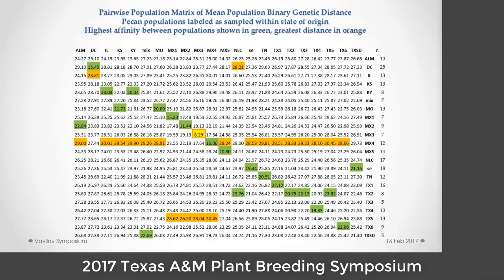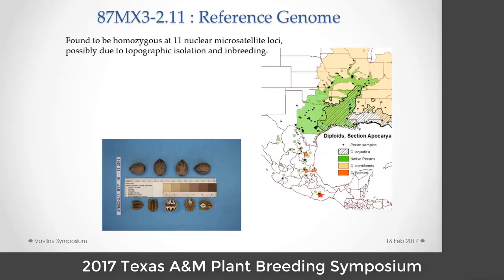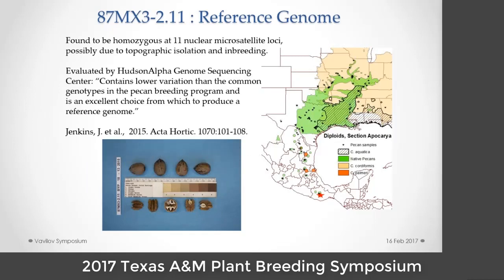Doing profiles across Bruce's collection as well as ours, the only individual I found that was homozygous at all 11 nuclear microsatellite loci came out of that Oaxaca population — possibly due to topographic isolation and inbreeding. Since it's hard to get an inbred in pecan because of inbreeding depression, we'll take what we can get. What we thought we would do is see if that would be an appropriate reference genome. I talked to Bob Klein, who recommended I talk to the folks at Hudson Alpha. He knew Jeremy Schmutz and said if we could get them involved in some sequencing, it would be helpful.